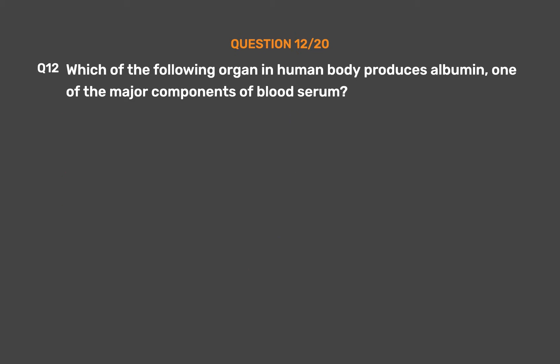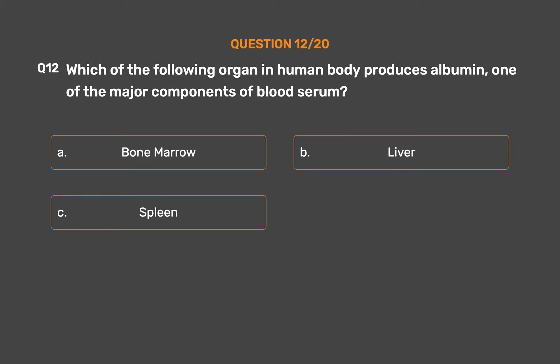Question No. 12. Which of the following organs in the human body produces albumin, one of the major components of blood serum? Option A: Bone marrow. Option B: Liver. Option C: Spleen. Option D: Pancreas. The correct answer is Option B: Liver.